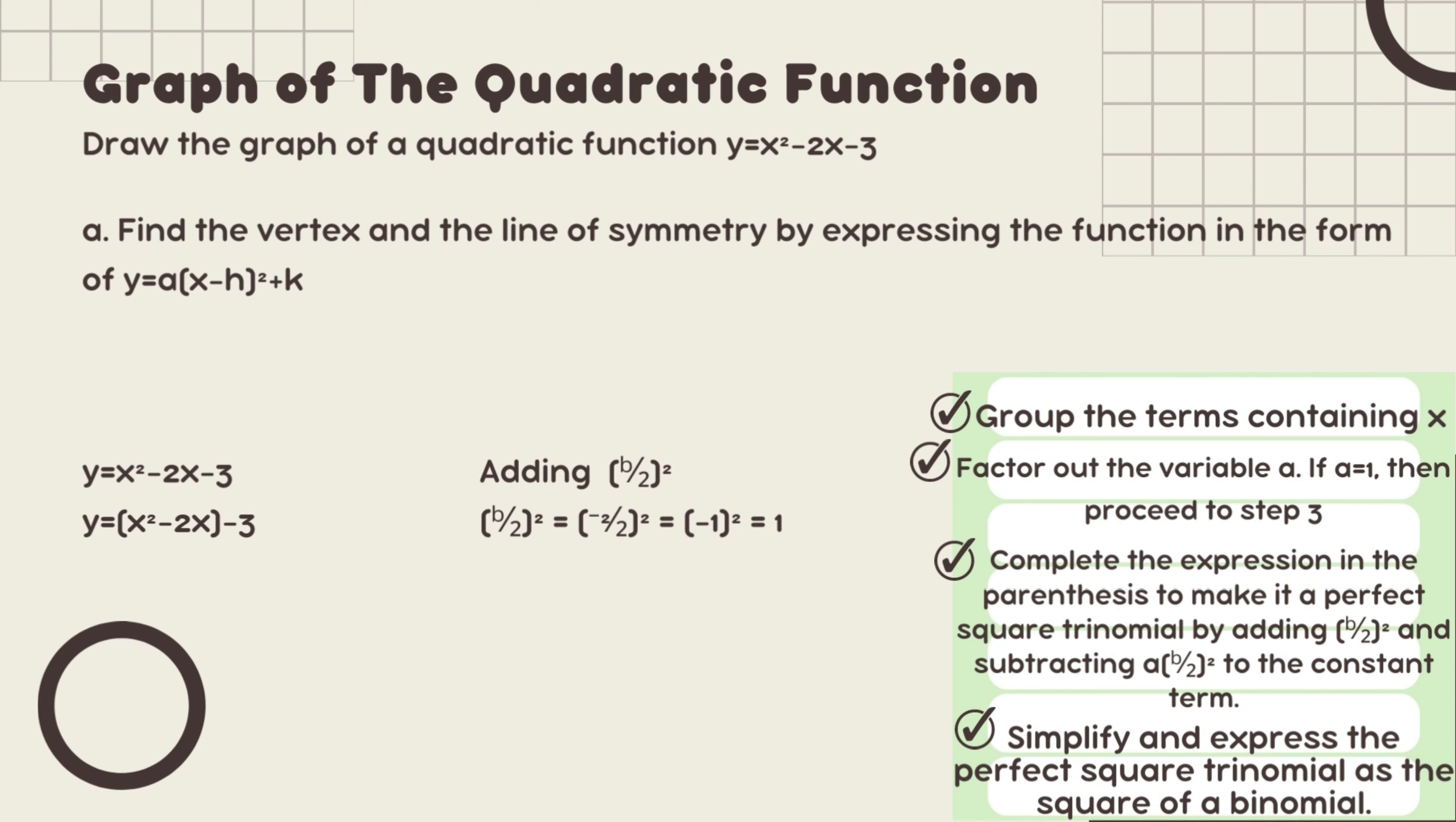Next is by subtracting a times the quantity of b over 2 squared. Now since we have got our b over 2 squared, we will just copy the answer 1. Then the value of our a, which is 1, so 1 times 1 equals 1. Then we will add negative 3 minus 1. Since it's both negative, negative 3 negative 1, the answer will be negative 4.